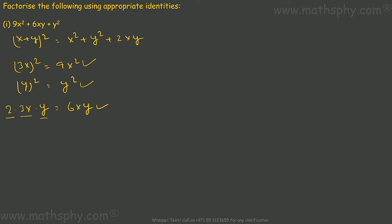So if I write this equation as (3x + y)², this will be equal to 9x² + 2 × 3x, which is 6x × y = 6xy, plus y². So this is this one. If I factorize this, I get this through this identity.